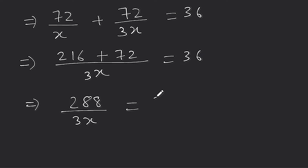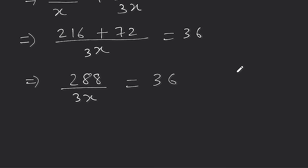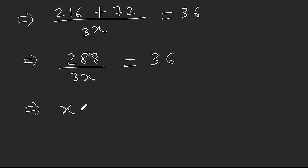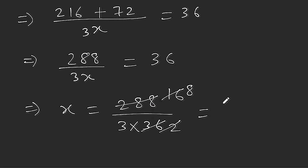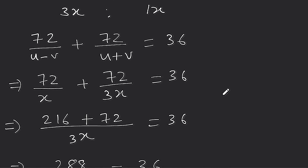तो 288/3x = 36। यहाँ से x का value निकालने के लिए x उधर जाएगा और 36 उधर। तो x = 288/(3 × 36) = 288/108। 18 से cut होने पर: 288/18 = 16 और 108/18 = 6। फिर 2 से cut होने पर x = 8/3 आ जाता है।